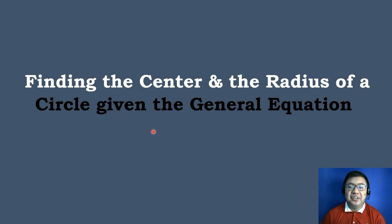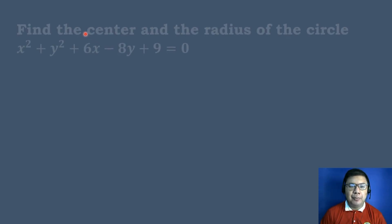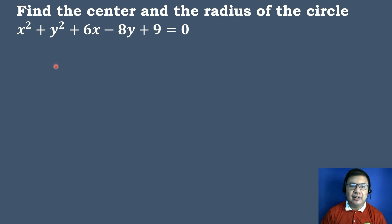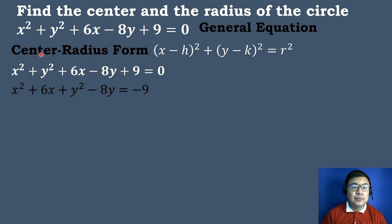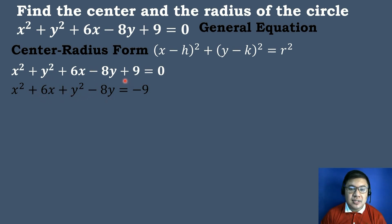Now let's find the center and radius of a circle when the given equation is in general form. Find the center and radius of the circle: x squared plus y squared plus 6x minus 8y plus 9 equals 0. Since this equation is in general form, we must first transform it into center-radius form. We group the terms: x squared plus 6x, plus y squared minus 8y. Then we transpose the constant 9 to the other side, where it becomes negative 9.